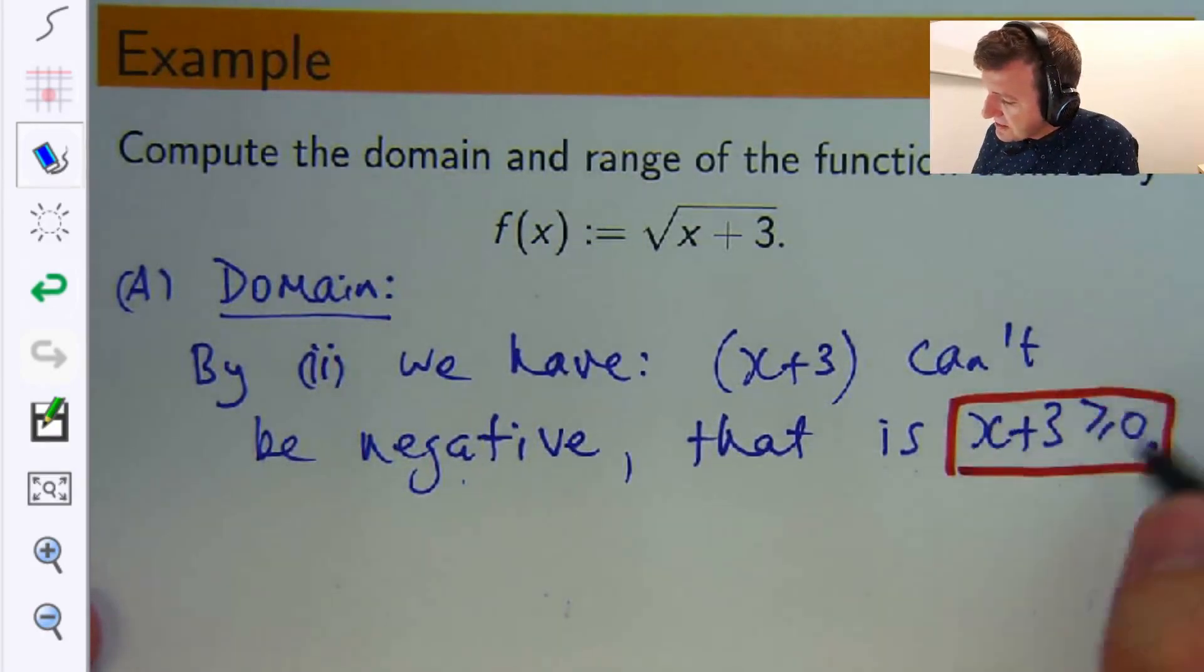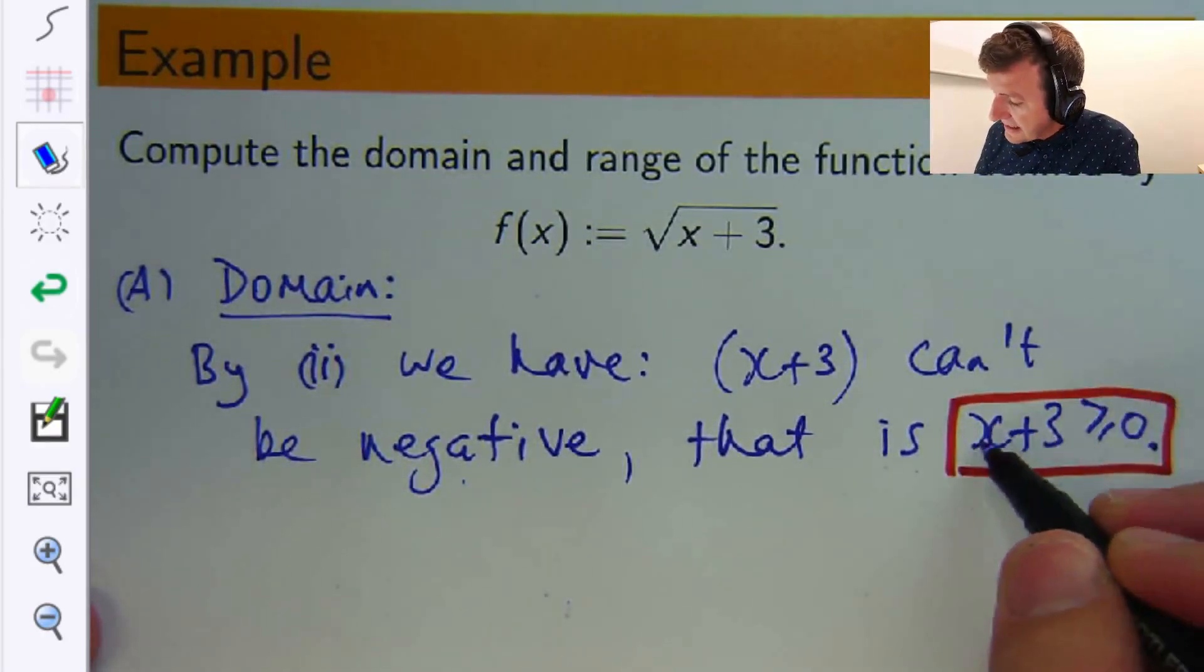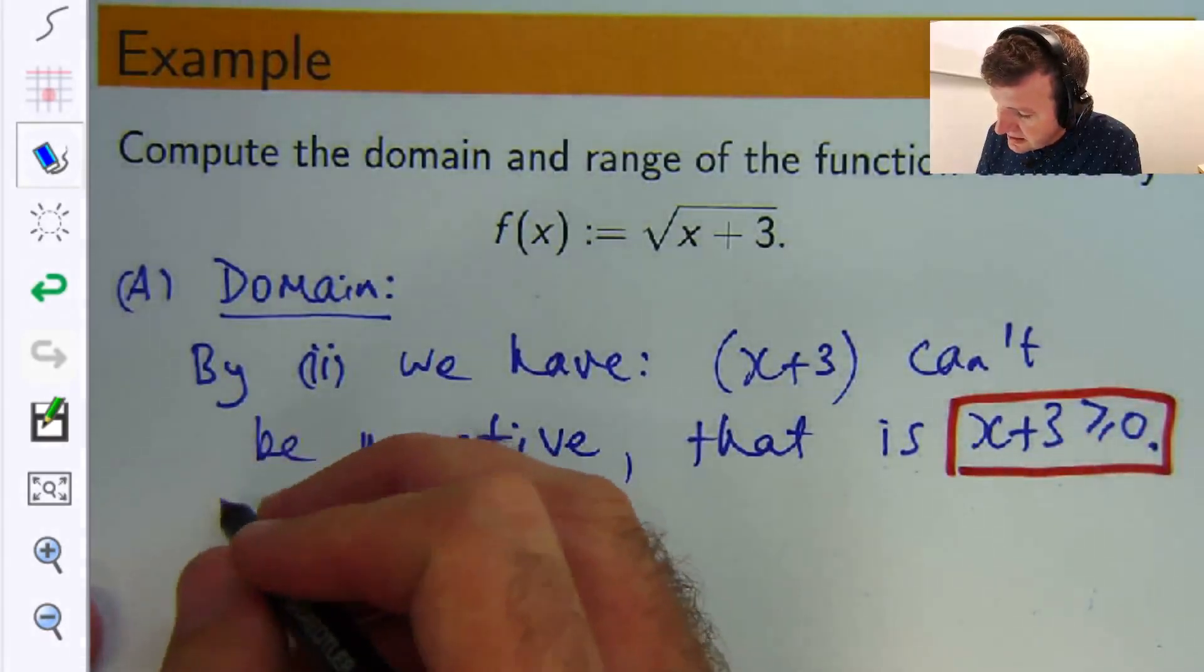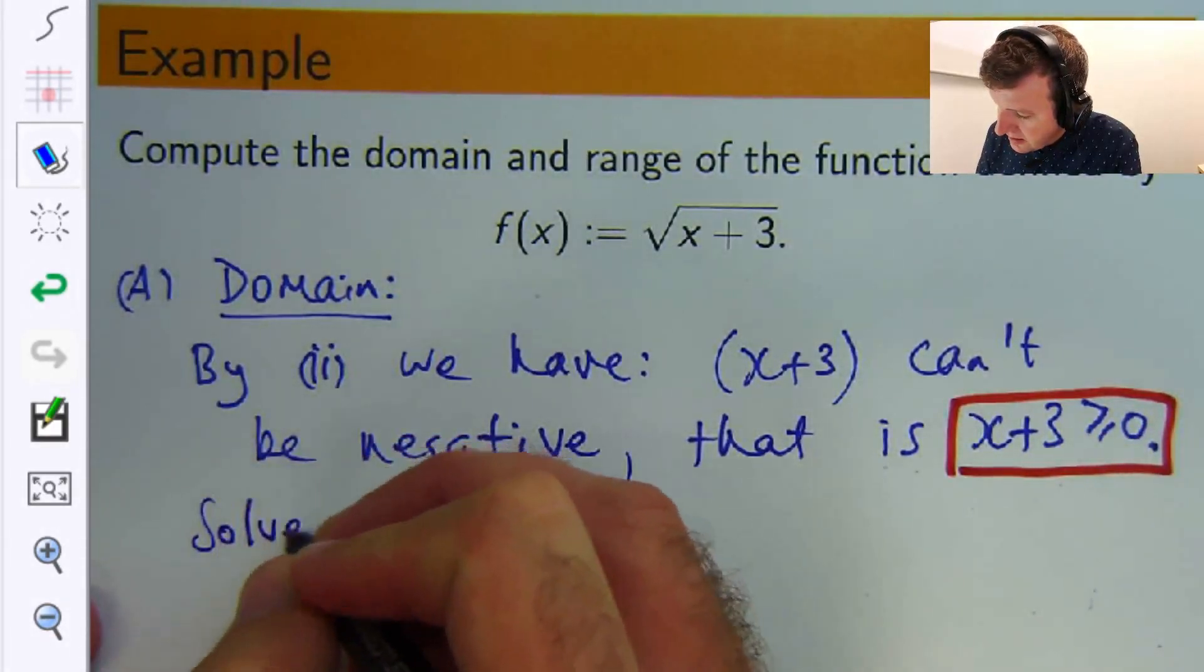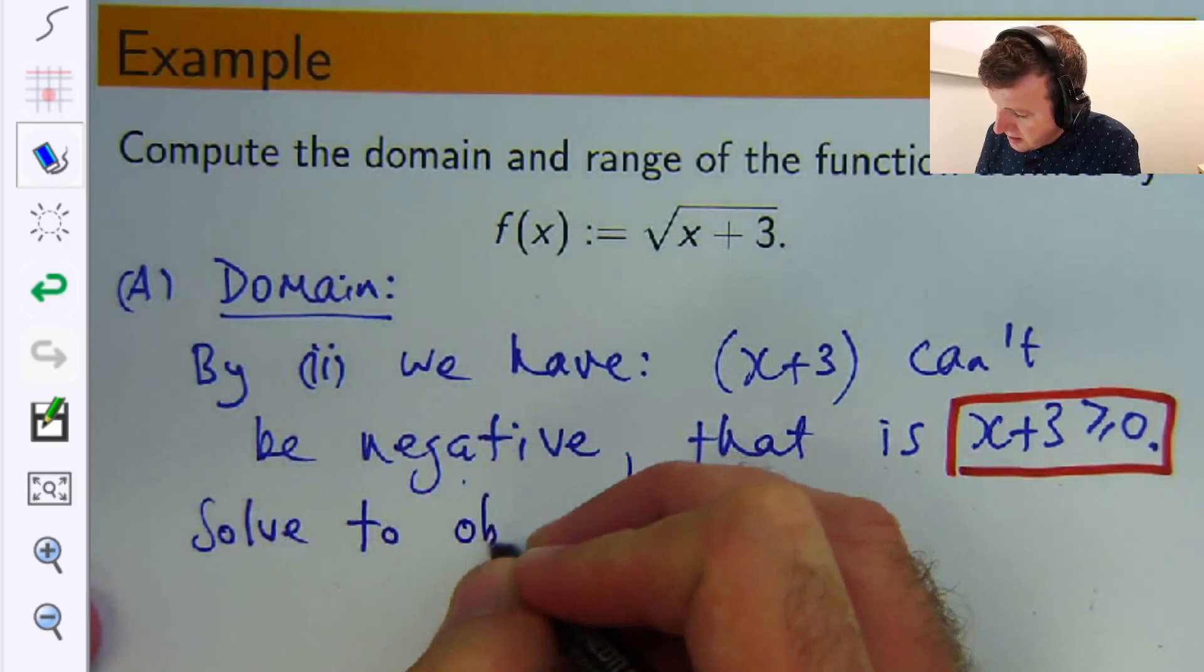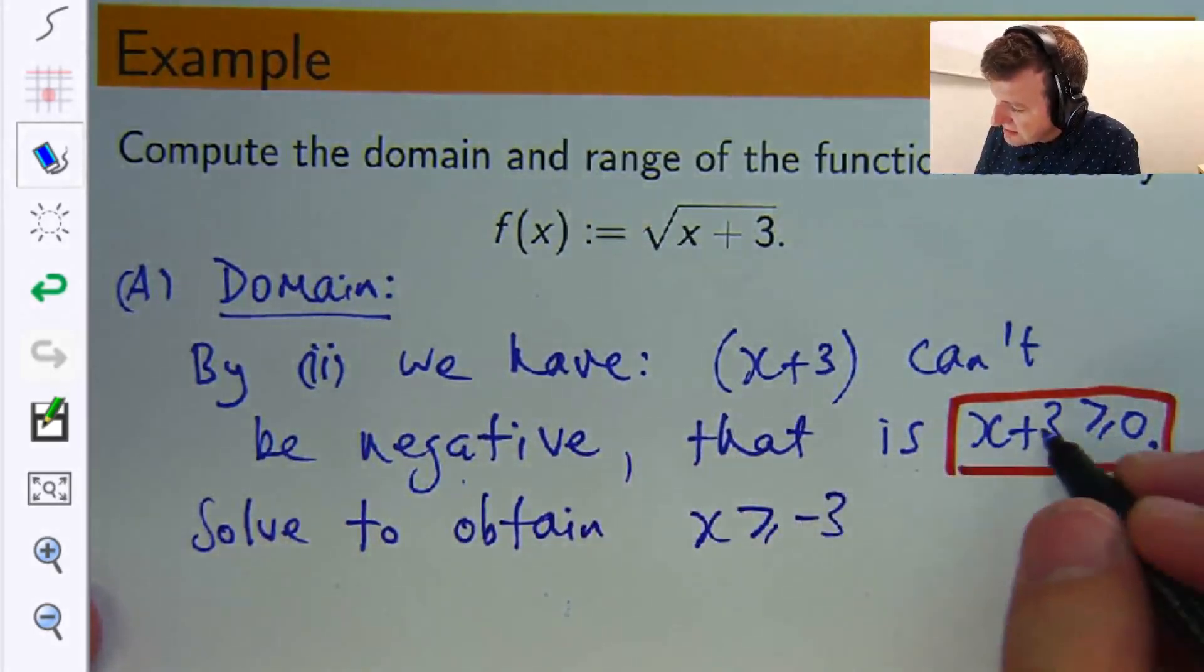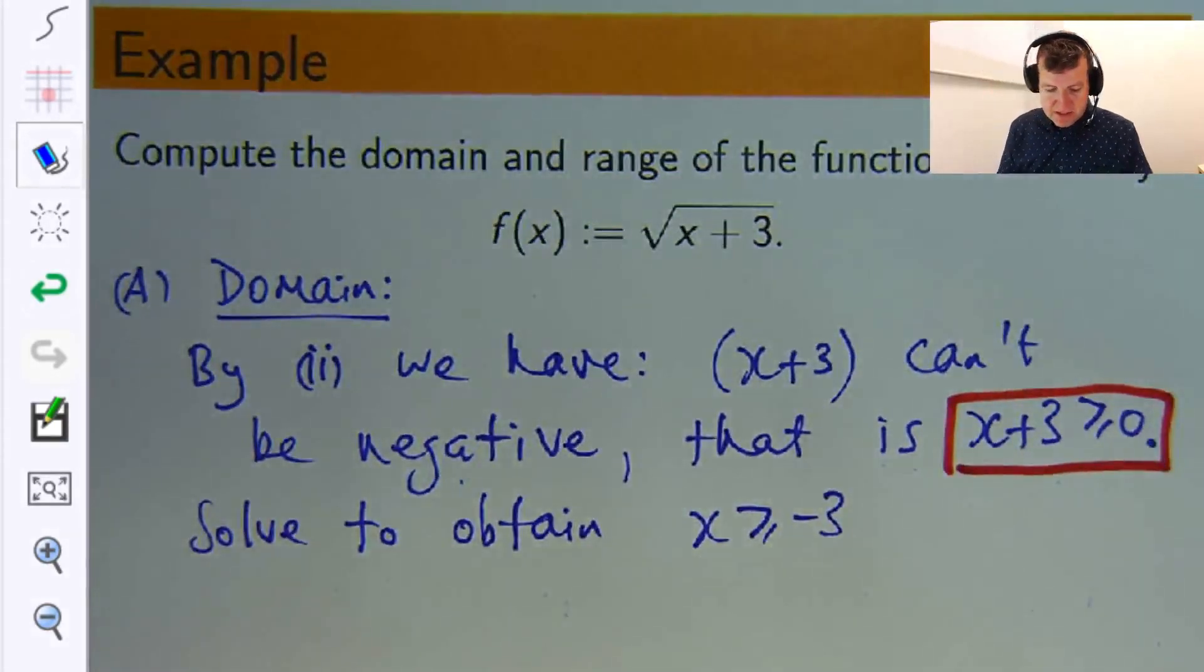So basically with this inequality, I want to make x the subject. So if I take away three from both sides, I'll get x is greater than or equal to negative three, because negative three and negative three cancel out. This is what you'll get.